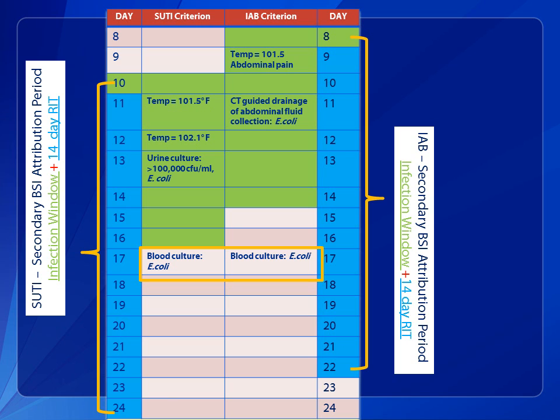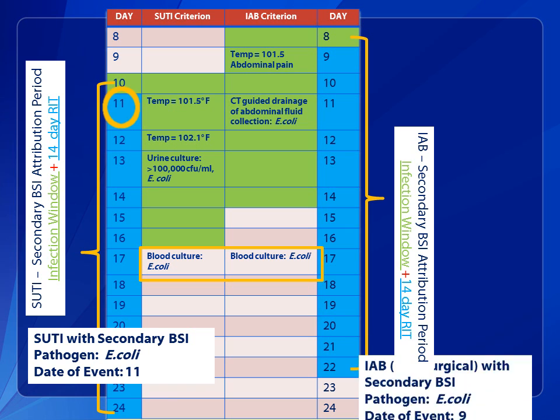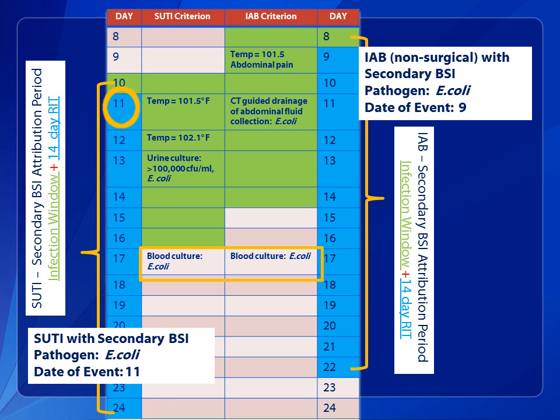The final determination is a SUTI with secondary BSI, pathogen E. coli, date of event hospital day 11, and a non-surgical IAB with secondary BSI, pathogen E. coli, date of event hospital day 9.